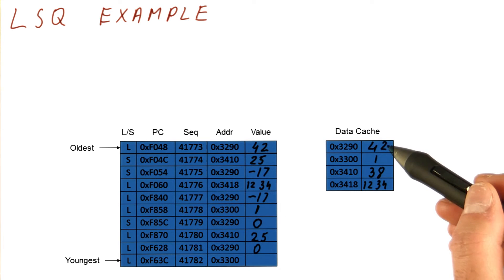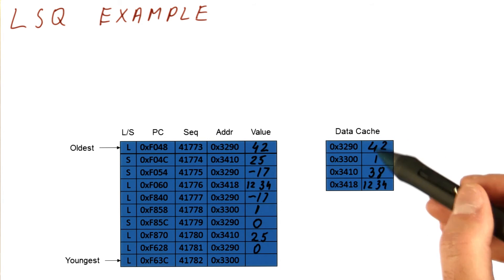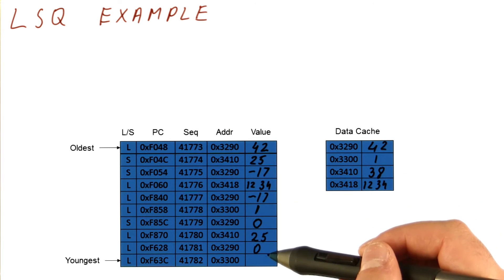Note, however, that the memory location, as far as the cache and the memory are concerned, still contains the value of 42 at this time, although there have been several modifications. Why? Well, because the stores haven't sent the values to the data cache yet.